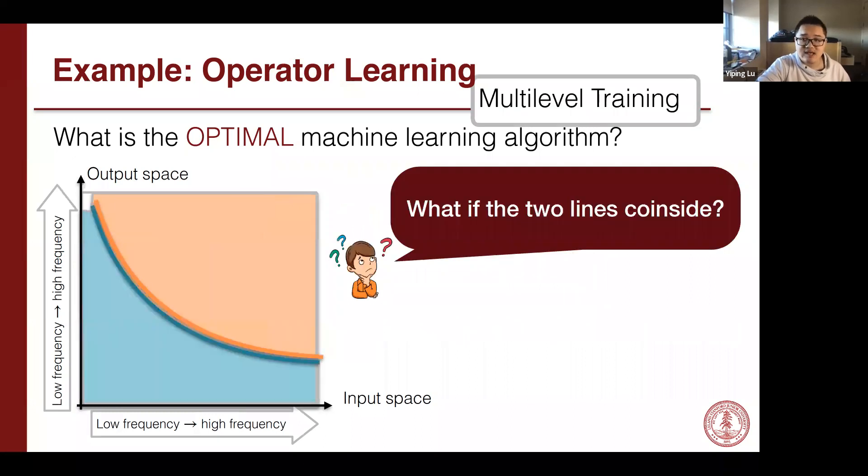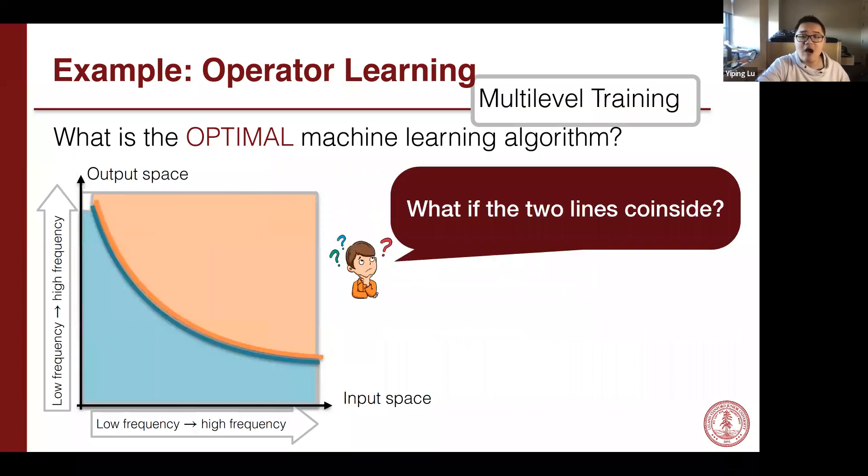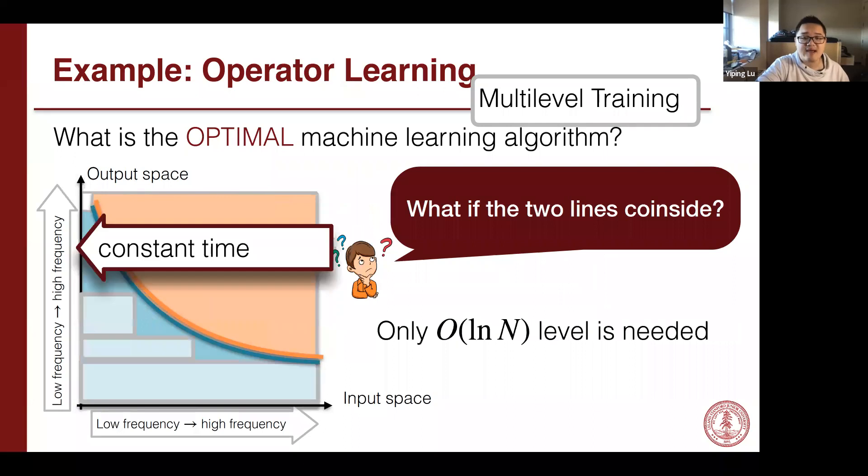But in the worst cases, if the two lines coincide, we don't have the white area here for us to do the zigzag approximation. Can you still use multi-level training? The answer is yes. But the drawback is you will use log N levels. This is because we only care about the rate with respect to n. Every time we can have a constant time shrink of the rectangular size. So that only log N levels are needed.